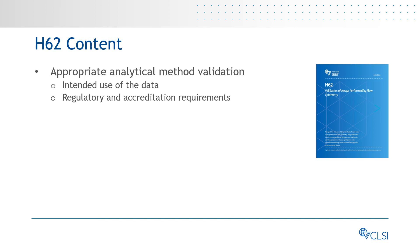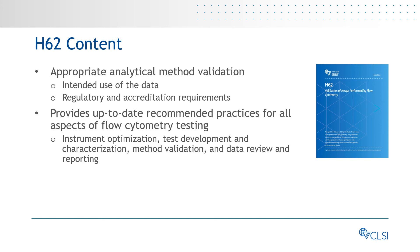The H-62 guideline provides specific recommendations for the appropriate analytical method validation approach based on the intended use of the data and regulatory and accreditation requirements, if any, associated with this use. The guideline provides up-to-date recommended practices for all aspects of flow cytometry testing, including instrument optimization, test development and characterization, method validation, and data review and reporting.